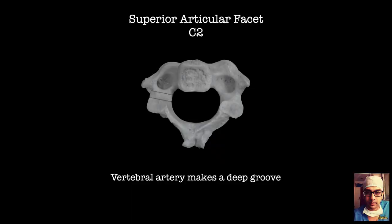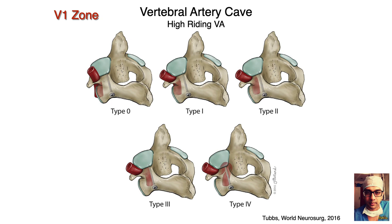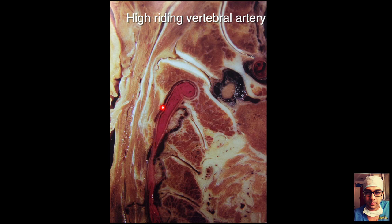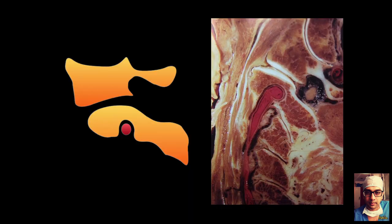The problem with the pars of C2 is that the superior articular facet can be deeply notched by the vertebral artery, with variation ranging from minimal to very deep notching. This makes placing screws in this region quite dangerous. A high-riding vertebral artery reaching very close to the superior articular facet makes screw placement here potentially hazardous.